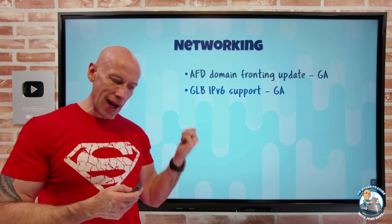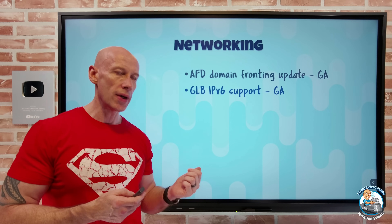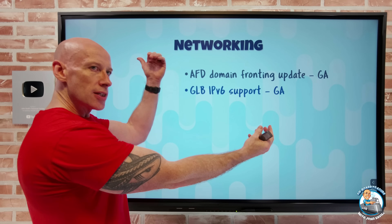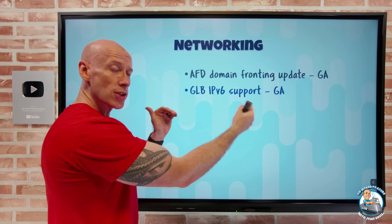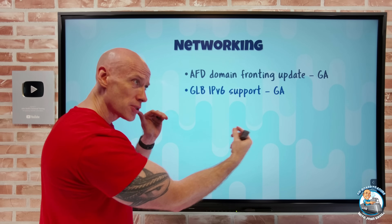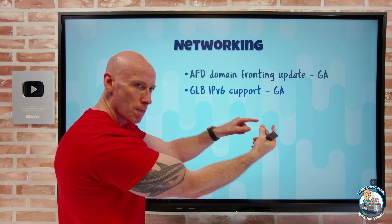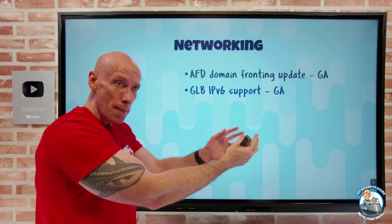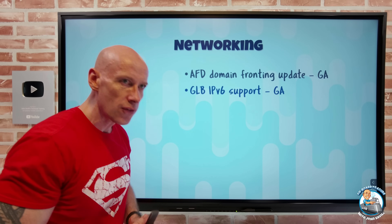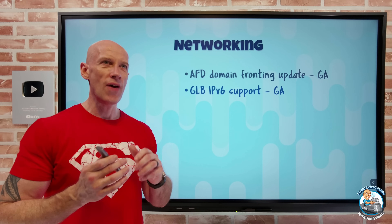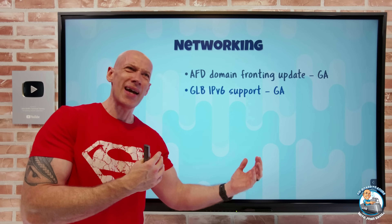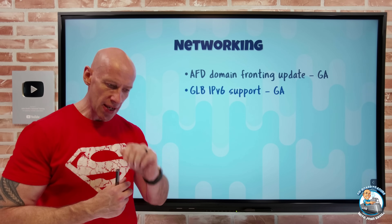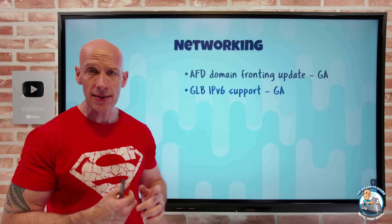The gateway load balancer now has IPv6 support in GA. The gateway load balancer fronts a network virtual appliance — as traffic comes in, it does a bump in the wire without using user-defined routes or changing destination hops. Traffic bumps over to the gateway load balancer, goes to the virtual appliance for mirroring, inspection, or protection, then flows back and continues on its path. This is a great way to implement NVAs without struggling with high-availability routing complexity. Now you can do it with IPv6 in addition to IPv4.